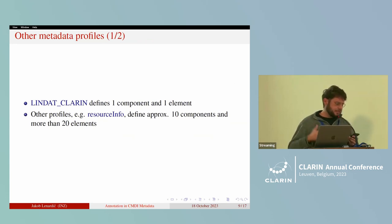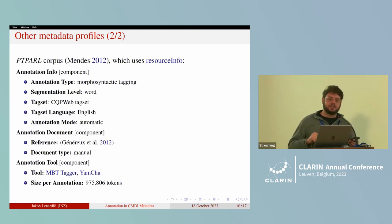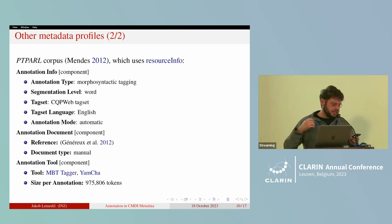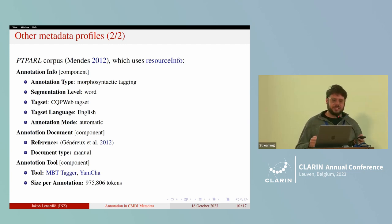Turning to other metadata profiles, I'd like to begin with a brief comparison. While the Lindat-CLARIN profile defines only one component and one annotation element, other profiles define many more. For instance, the resource info profile defines around 10 components and more than 20 embedded elements. The metadata record for the Portuguese parliamentary corpus, which uses the resource info profile, employs three components for annotation: the basic info component defining annotation type — morphosyntactic tagging — plus segmentation level, tag set, language of tags, and annotation mode; a component for the annotation document, which is a manual; and a component for annotation tools — the chunk annotator Yamcha and the MBT tagger. The record also defines the size of the annotated subcorpus.